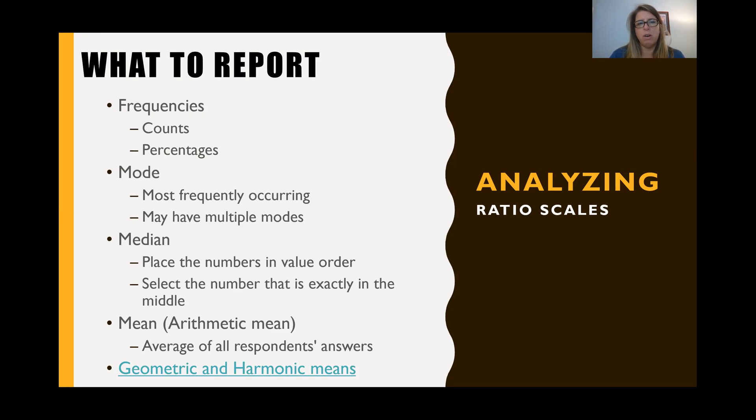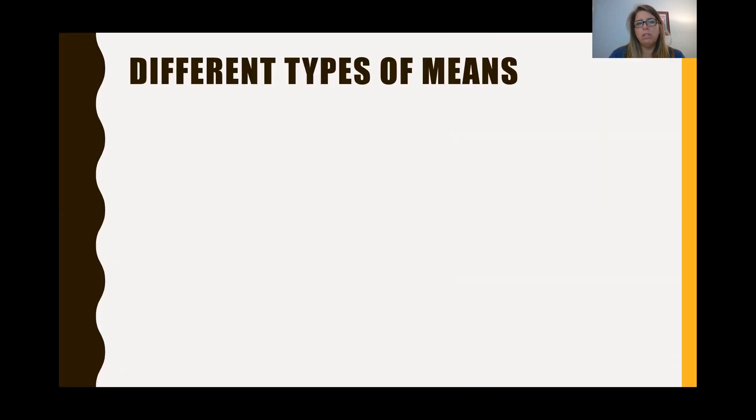So what are geometric and harmonic means? Well, there's three main different types of means. The first is the arithmetic mean that most of us are very familiar with. And this is just adding all the items and dividing by the number of items that exist. So that's the most common mean we use. And it's the most common mean that I've used in statistical analysis.